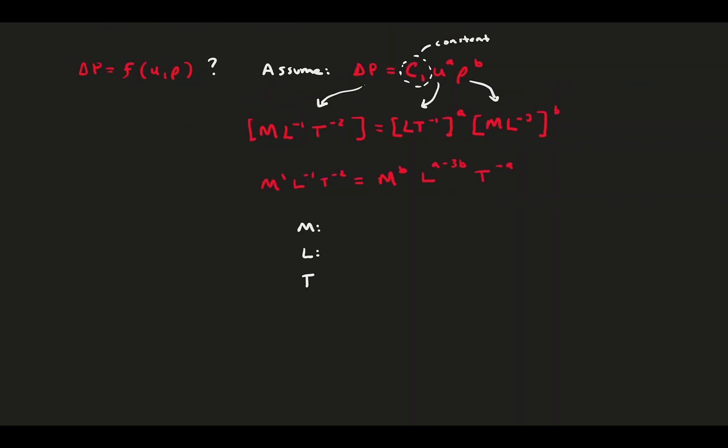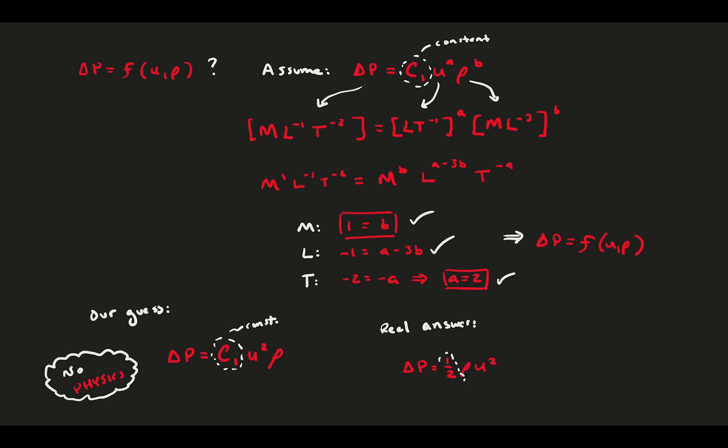We have two exponents and three possible equations for each dimension. Mass tells us that b equals 1. Time tells us a equals 2. And the length equation works when we plug these values in. So it all checks out. There is a combination of u and rho that makes the units of pressure. Our guess, with the exponent values in place, is that delta p goes as u squared rho with an unknown constant. If we compare that to the real answer, we find that delta p goes as 1 half rho u squared. So we were right again.